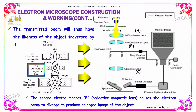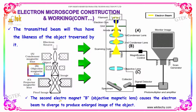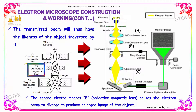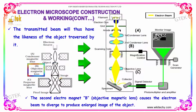The transmitted beam will thus carry the likeness of the object traversed by it. The second electromagnet B, the objective magnetic lens, causes the electron beam to diverge towards the enlarged image of the object.